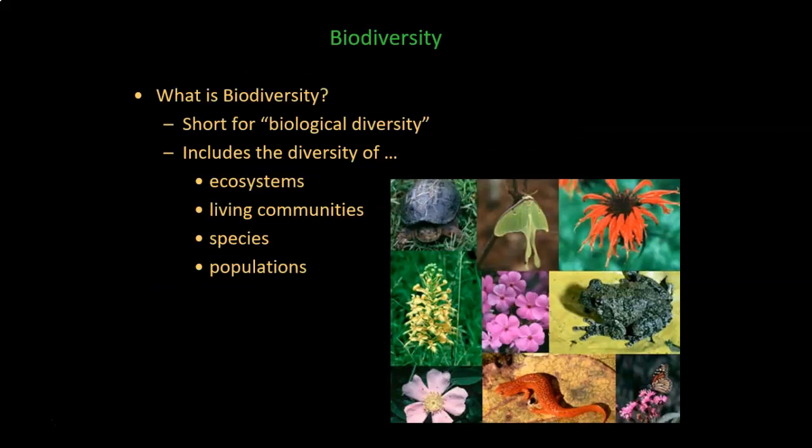Biodiversity is a term that's a short version of the phrase biological diversity. Technically, biodiversity refers to the diversity of ecosystems or the diversity of living communities in an area. A community is all the organisms that live in an area — not including the water, the air, the land, or the soil. You're just talking about the organisms.